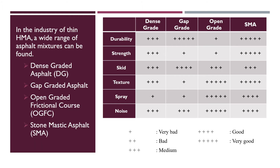When it comes to hot mixed asphalt, the industry of thin hot mixed asphalt has a wide range of asphalt mixtures. Normally these include dense graded asphalt, gap graded asphalt, open graded asphalt, and stone mastic asphalt. Here is a summary and comparison of the properties of these different types of asphalt mixtures.